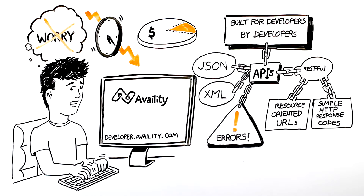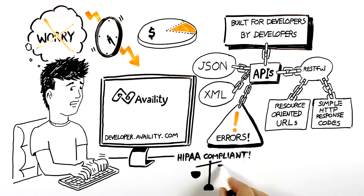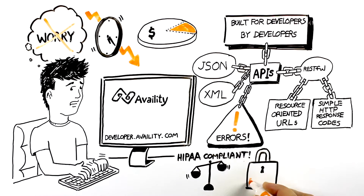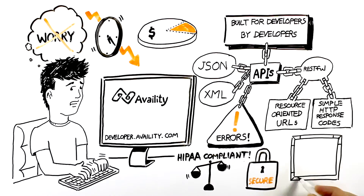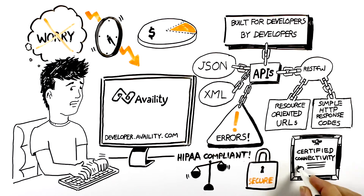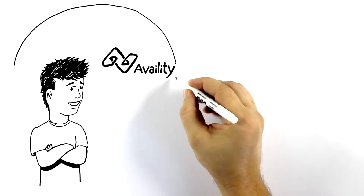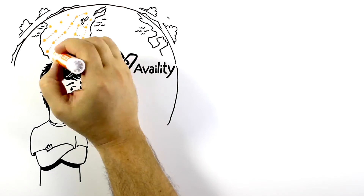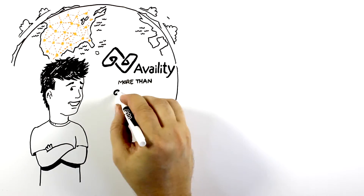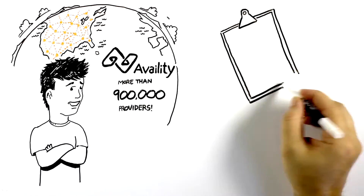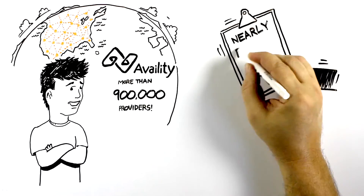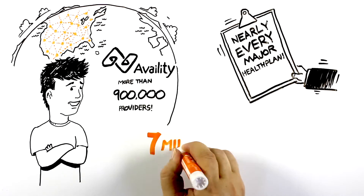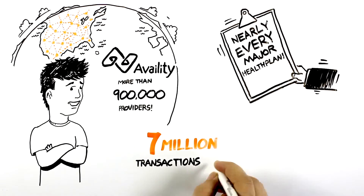Using Availity APIs, integration of healthcare data is simple and HIPAA compliant, with highly secure and certified connectivity to insurance companies nationwide. Availity is an industry-leading health information technology company with a nationwide network of more than 900,000 providers and nearly every major insurance company, processing 7 million transactions a day.